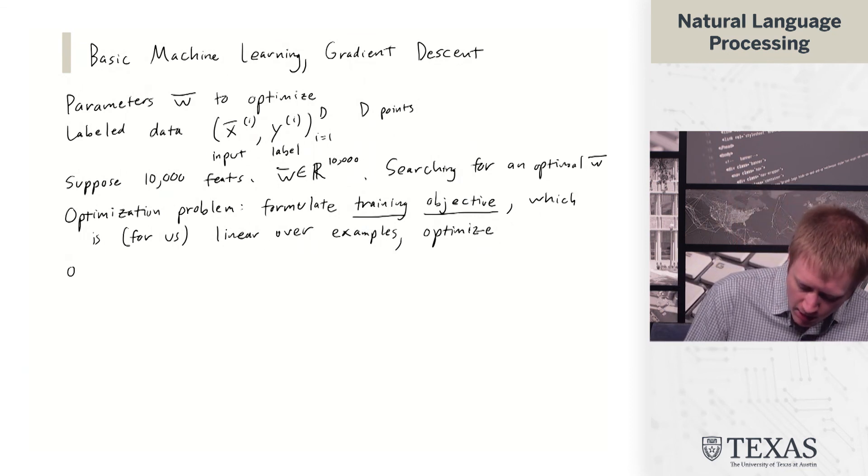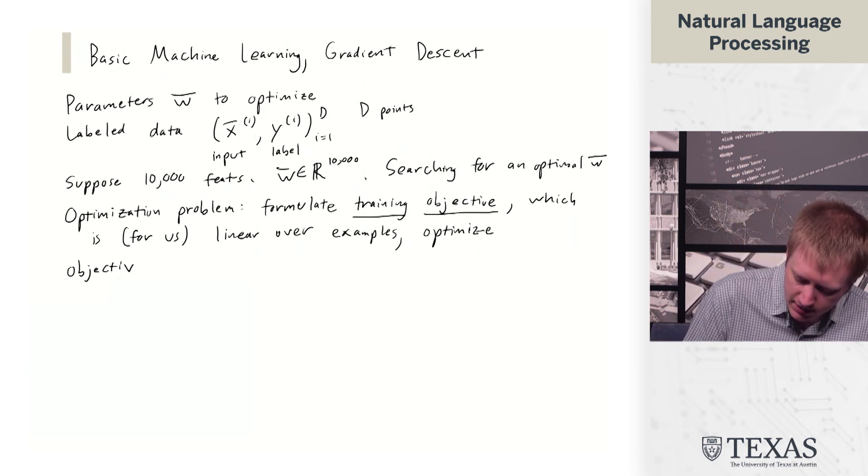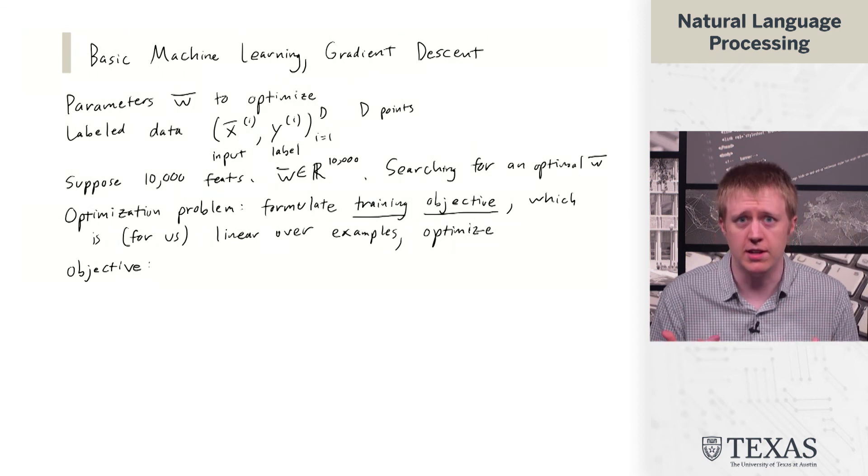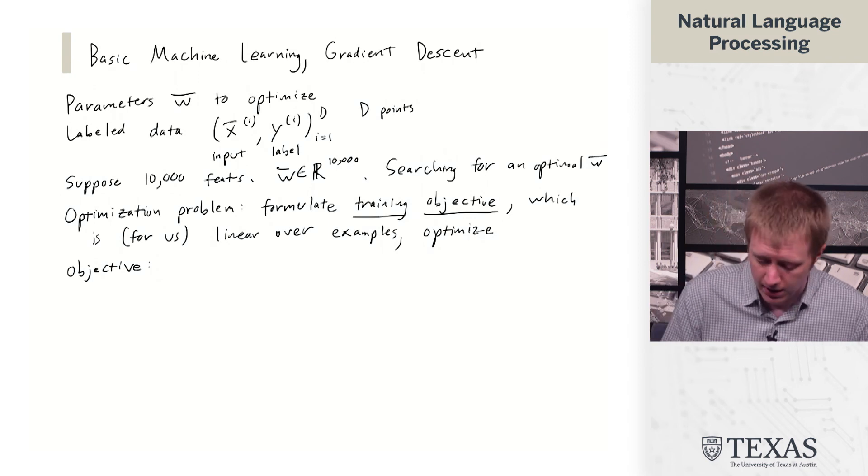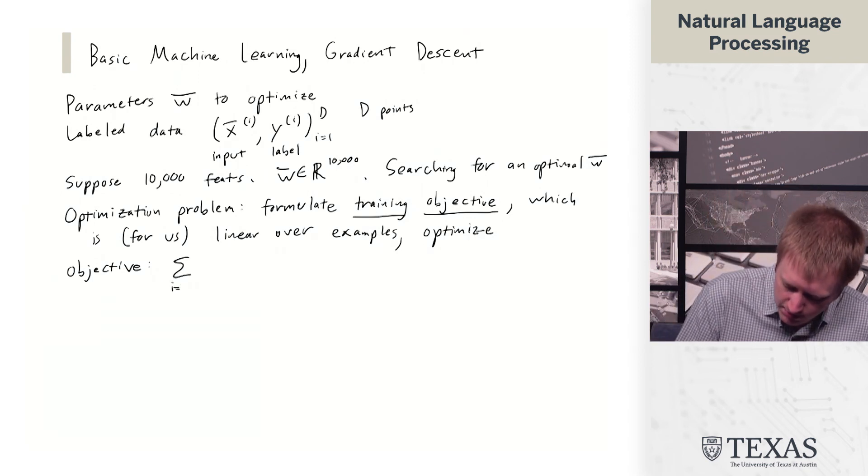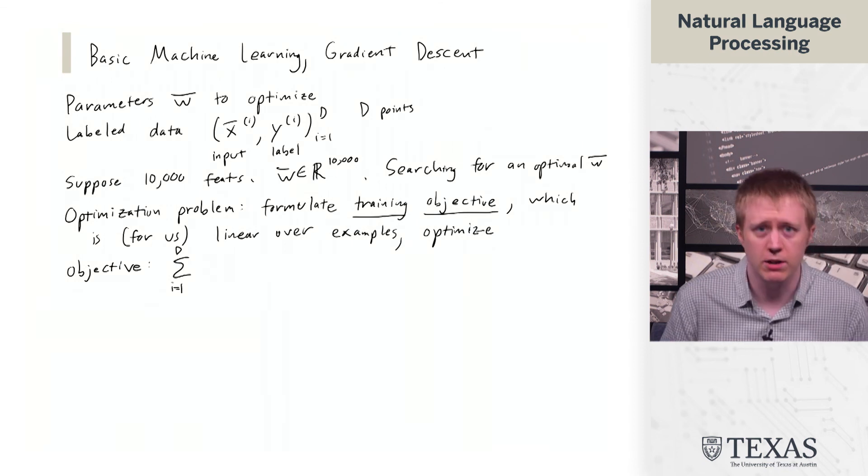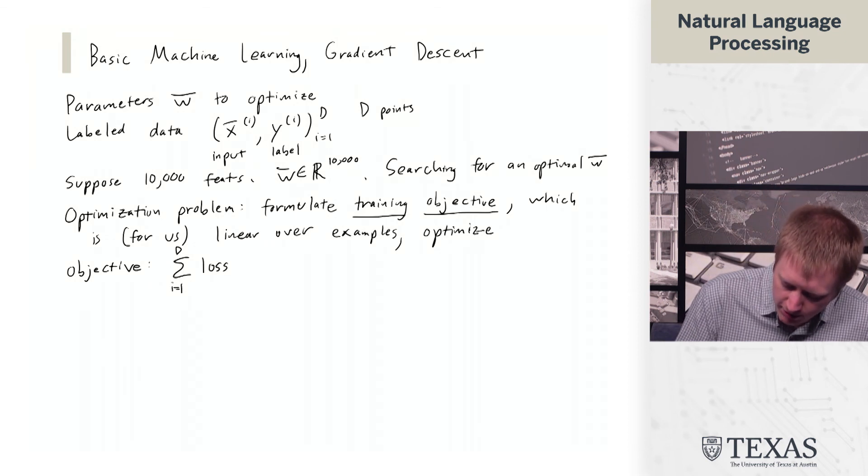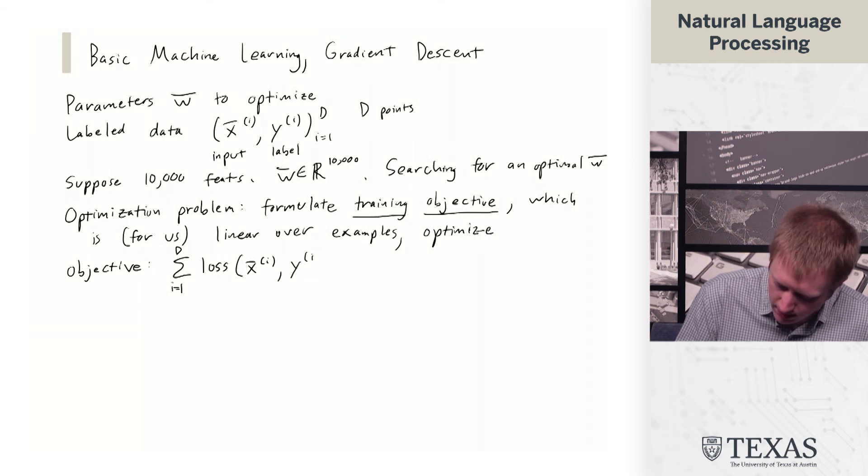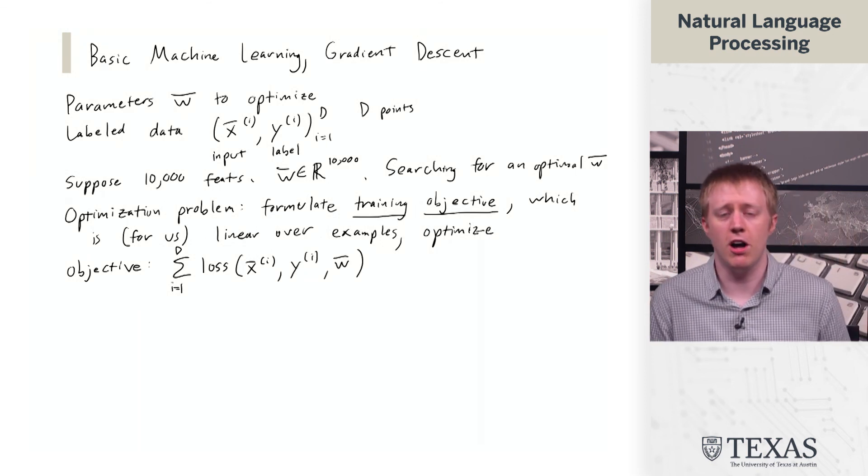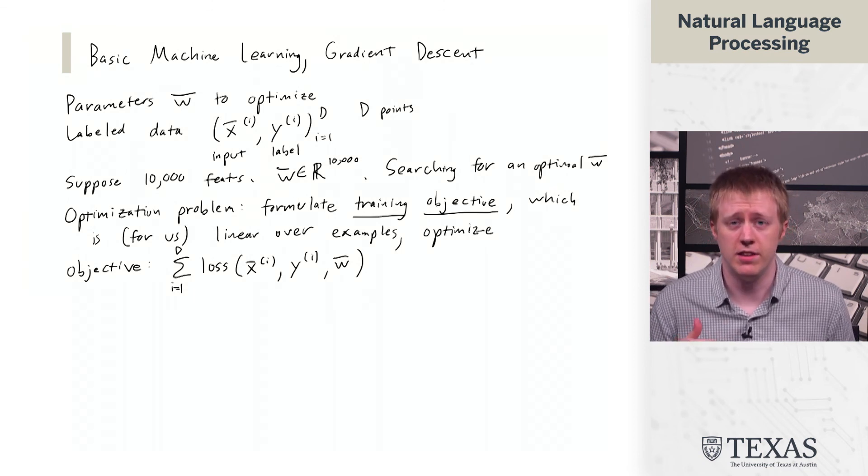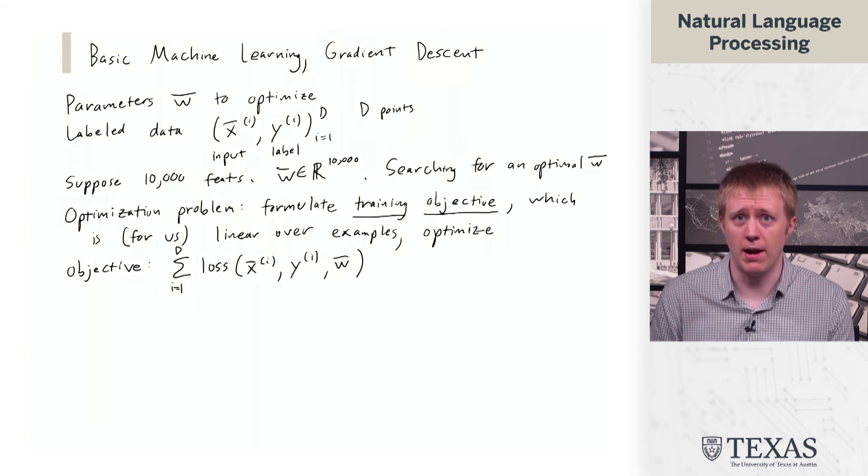So what does this objective look like? Again, to keep things pretty general, we'll get concrete when we actually see algorithms that fall into this paradigm. The objective looks like a sum from i equals 1 to d, so a sum over the training examples of a loss defined with respect to the i-th data point and the weights or parameters that we are optimizing.